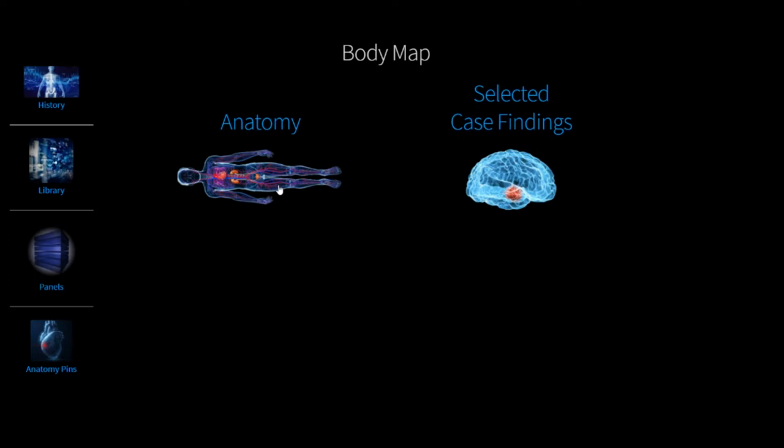The body map is a visual anatomic guide to direct you to videos showing either normal anatomy, or by selecting selected case findings, videos that show surgical changes, pathology, post-mortem changes, and other changes in the body.